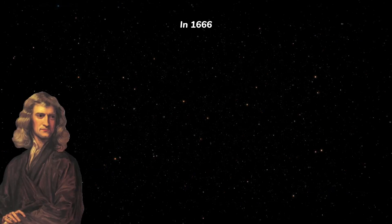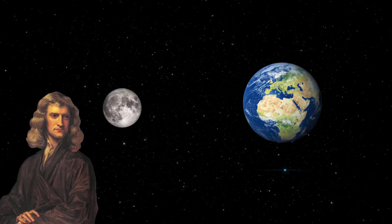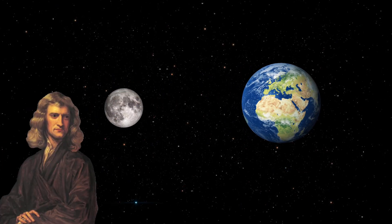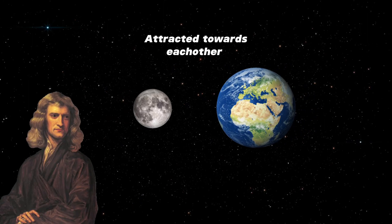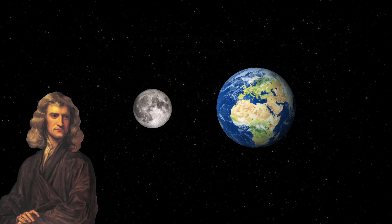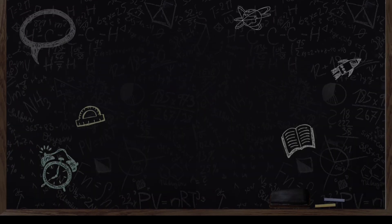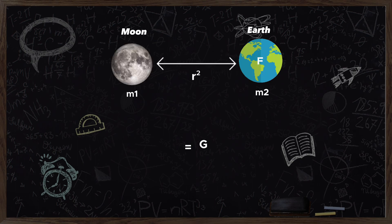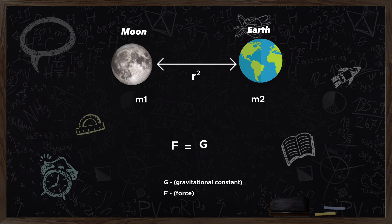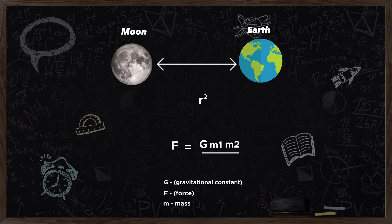In 1666, Isaac Newton stated that when two objects in space are attracted towards each other, this attractive force is considered to be gravity. He proposed a formula for gravity: the force acting between the Earth and any other object is directly proportional to the mass of the Earth and the object, and inversely proportional to the square of the distance separating their centers.